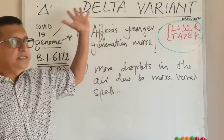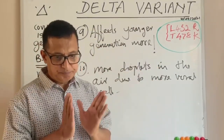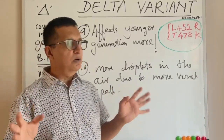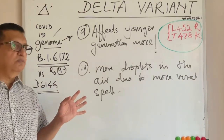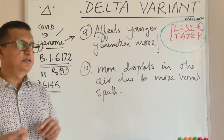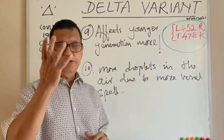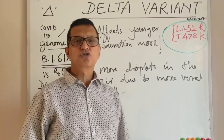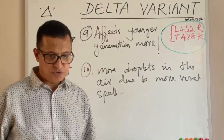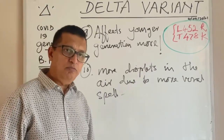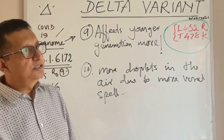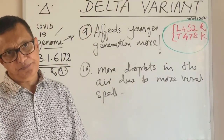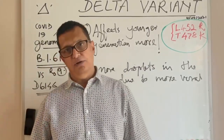Considering all 10 factors, the delta variant became dominant worldwide. Symptom-wise it differs from the original Wuhan wild variant: the original had fatigue, high fever, and cough as predominant symptoms, while the delta variant predominantly causes headache, sore throat, and flu-like symptoms. Gastrointestinal symptoms are also more common, as are blood clots and necrotizing areas due to blood clots.